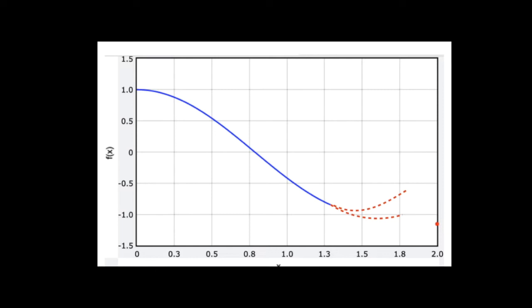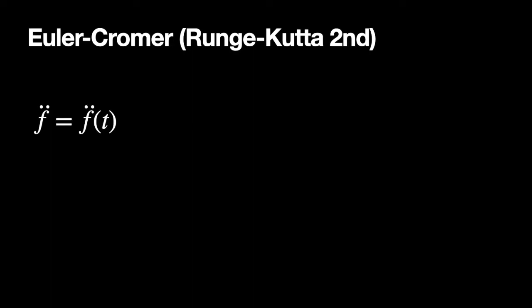The basic idea is that we have some function, and we're trying to find out what the function's doing, but we only know something about the slope of that function, or maybe the second derivative. If I know the slope, what can I find out about the function in the future? That's the whole idea of a numerical calculation. Let's look at the Euler method — I often call this the Euler-Cromer-Runge-Kutta second order method for finding the new function.